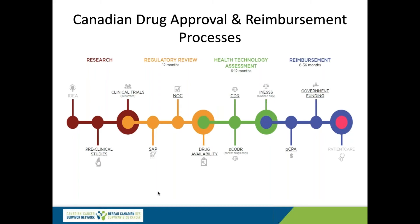The provinces play a different role — they review medications for listing on their public formularies, set reimbursement criteria, and negotiate prices. Under the Constitution Act, section 92, the delivery of health care is almost exclusively within provincial jurisdiction. There are also joint federal-provincial processes, which I'll call national processes, including CDR, PCODR, and PCPA — all of which we're going to talk about today. Pricing does not appear on this overall schematic because pricing runs concurrently across the entire timeline.